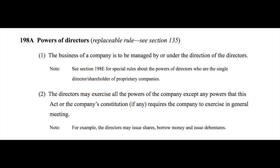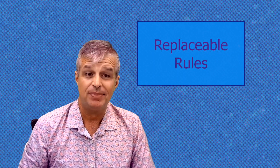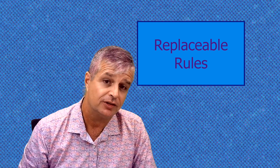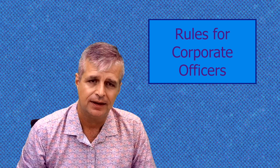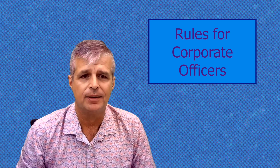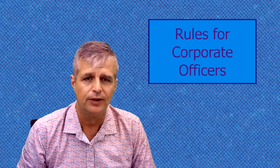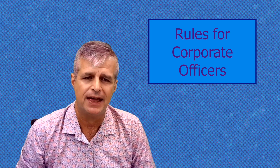For instance, section 198A of the Corporations Act says that the business of a company is managed by or under the direction of directors who may exercise all the powers of the company. This is a replaceable rule — companies can make some other leadership arrangement if they want, but if they don't, the replaceable rule will be the default. Second, the Corporations Act sets out fundamental rules for the officers of each company, most significantly the directors, the managing director and the company secretary — rules for how they're appointed, how they're paid, how they must conduct themselves, and even who's entitled to be an officer, because certain conduct might result in a person being banned from being a company director.